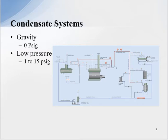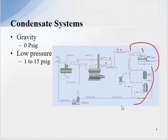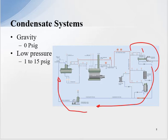On a gravity system — zero PSI or low pressure up to fifteen PSI — if we have a process that modulates steam, the steam to the process can be as low as zero PSI. Then the condensate needs to come down by gravity to a pumping unit, because we have to deliver it either back to the boiler plant or back to the deaerator. With those types of processes, they cannot tolerate any pressure.